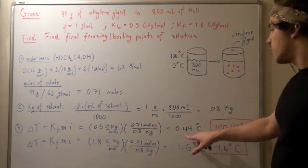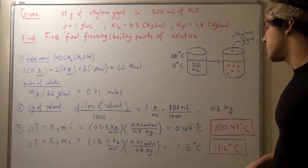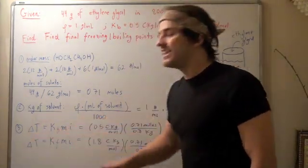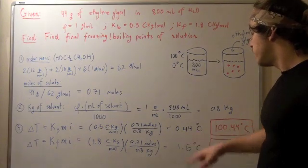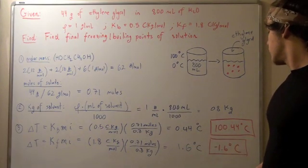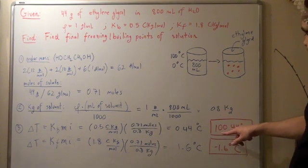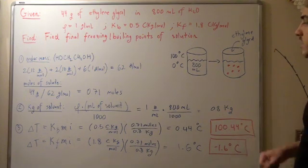We're left with 0.44 degrees Celsius. So our temperature, our boiling point increases by 0.44 of a Celsius degree. And that basically bumps our boiling point up to 100.44 degrees Celsius.